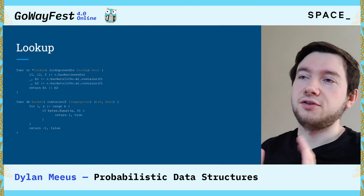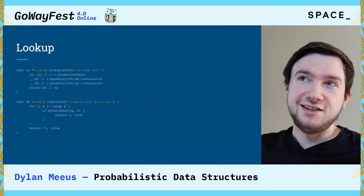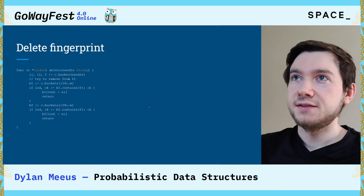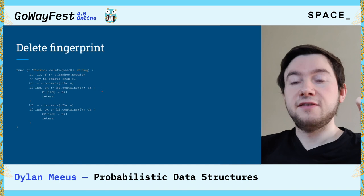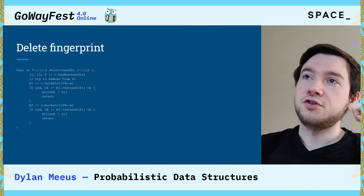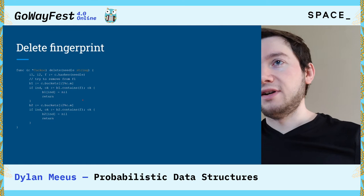We also return the index that our fingerprint has, and with this index we can do deletions. A deletion is very similar to lookup: take the three values of our username, find the bucket it corresponds to, check if the bucket contains the element, and if so — using the index the contains function returned — set this value to nil, essentially removing it from the cuckoo filter. If the first bucket lookup fails, we do the same for the second bucket.